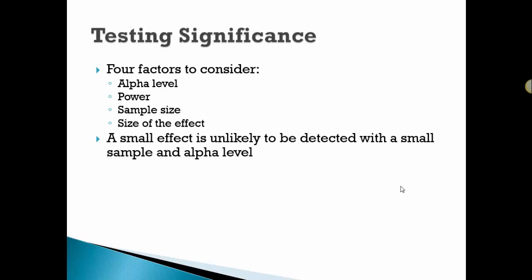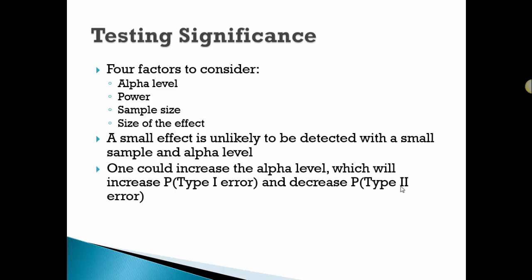A small effect is unlikely to detect with a small sample size and a small alpha level. One could increase the alpha level, but that would increase the probability of a Type I error and decrease the probability of a Type II error. Increasing the sample size will decrease both types of errors, but of course, in many cases we can't increase the sample size because it's related to a cost factor or possibly a time factor.